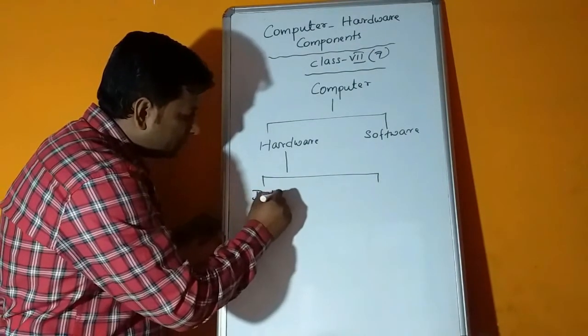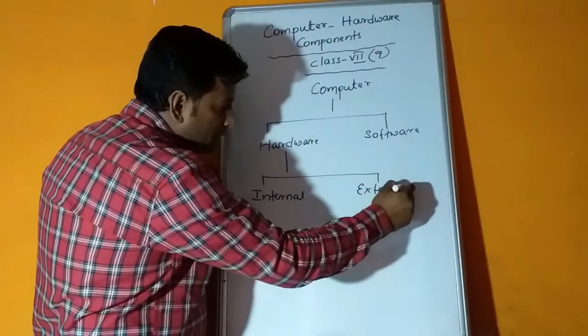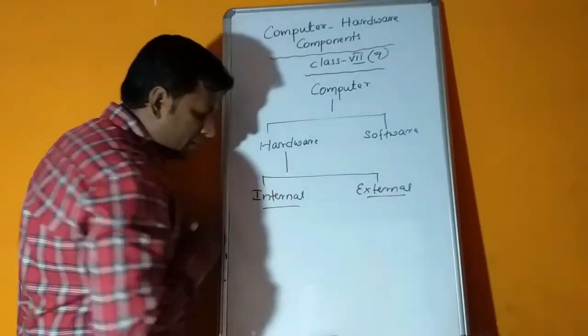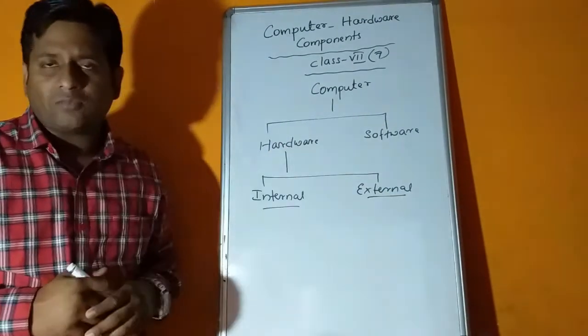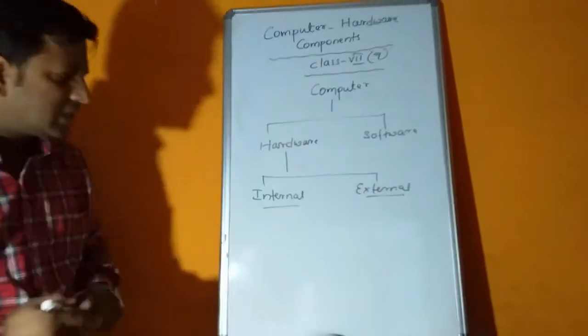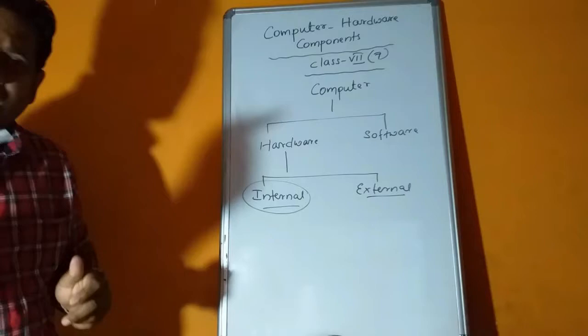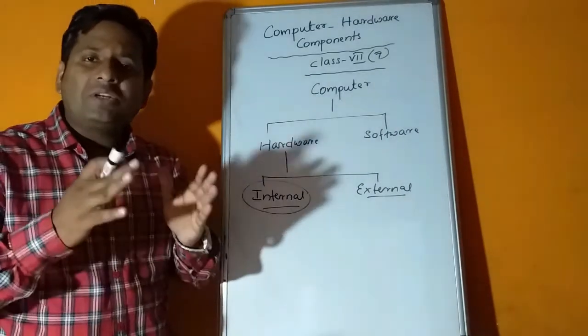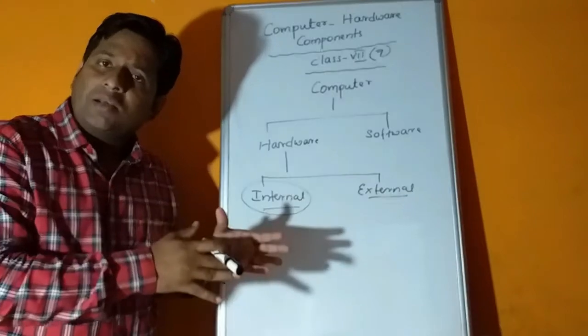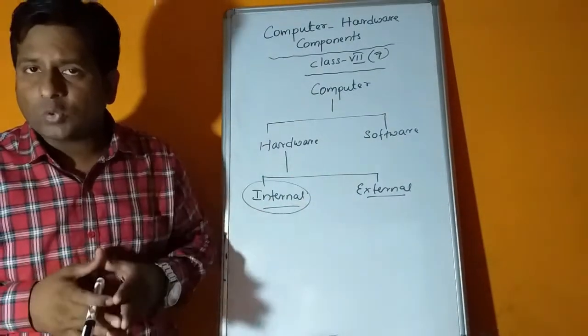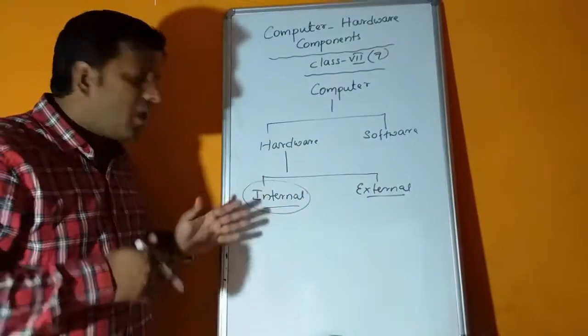I told you that hardware is categorized in two parts: internal and external components or internal hardware devices and external hardware devices. We have already discussed some internal hardware devices. Last discussion was up to disk drives like hard disks, CDs, DVDs and their uses.